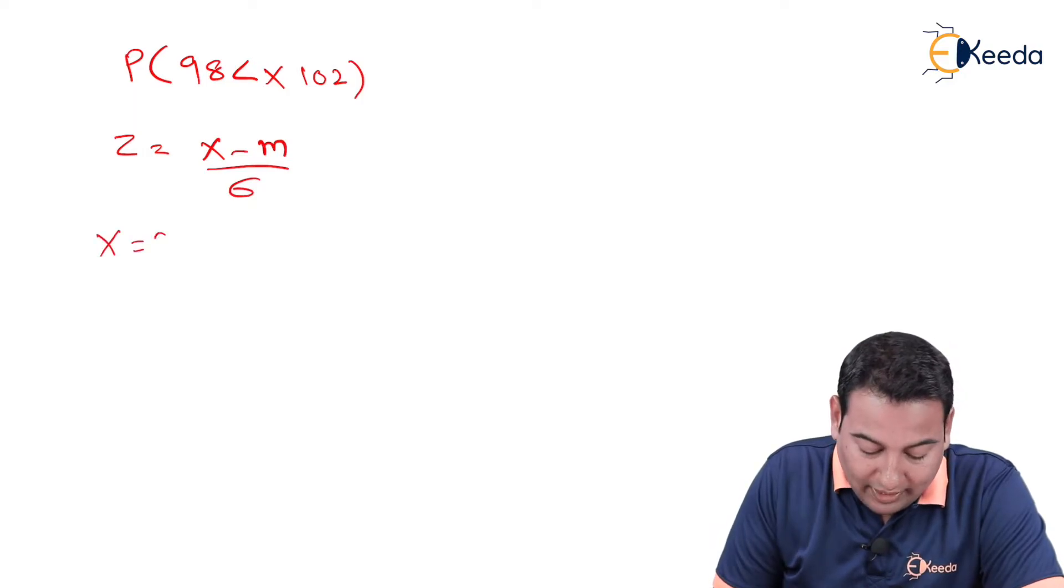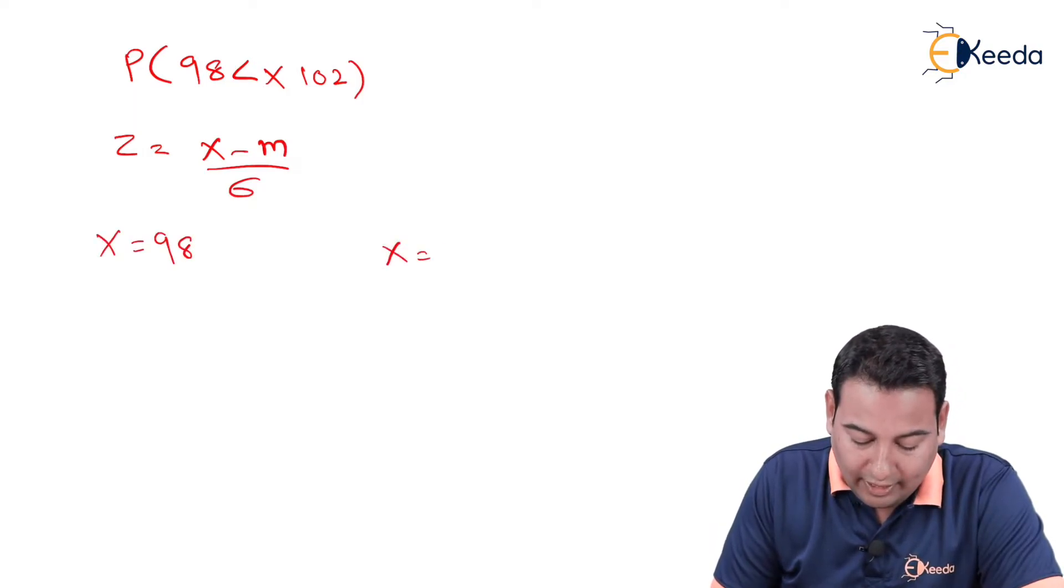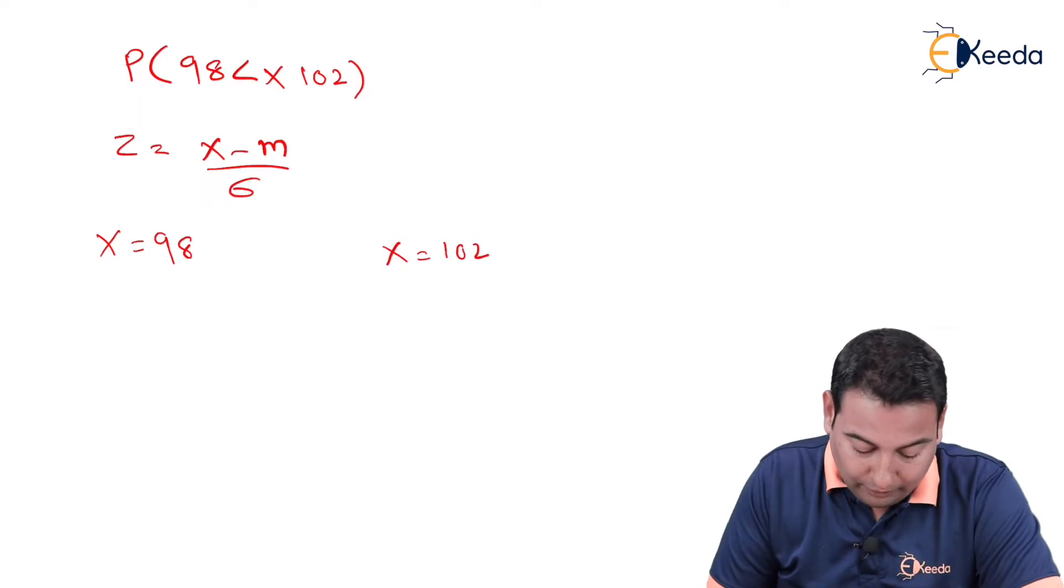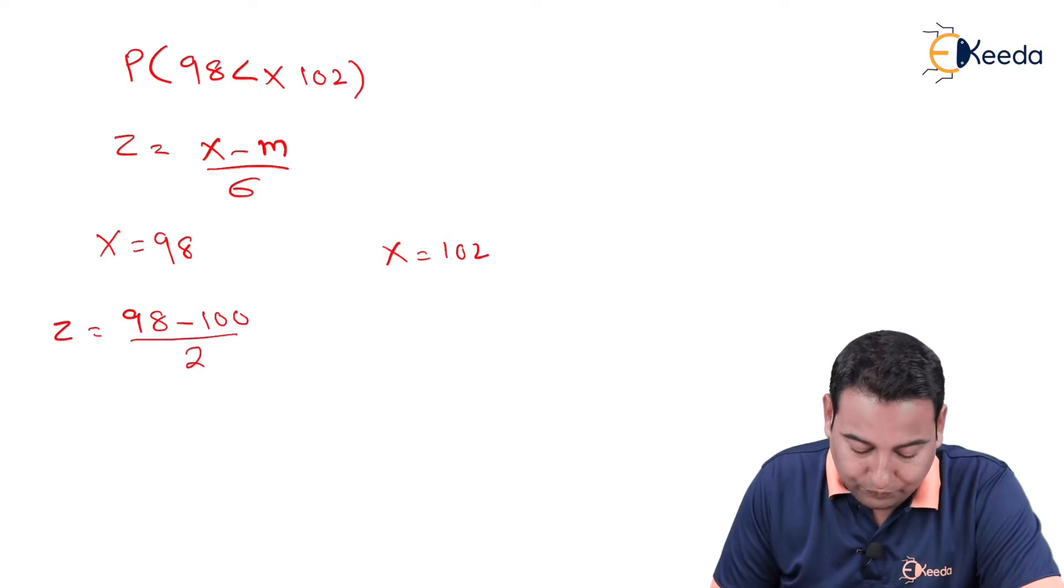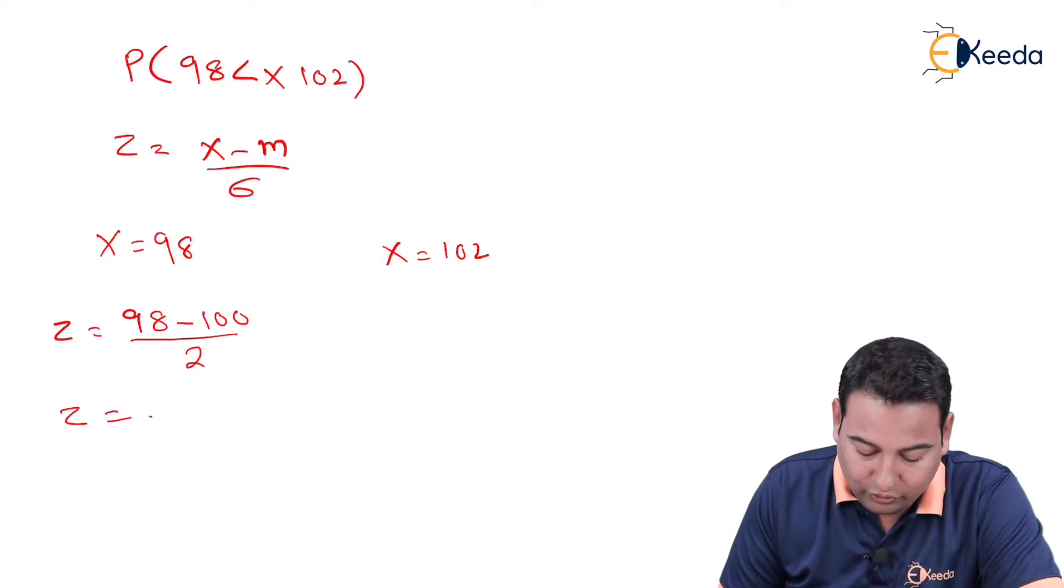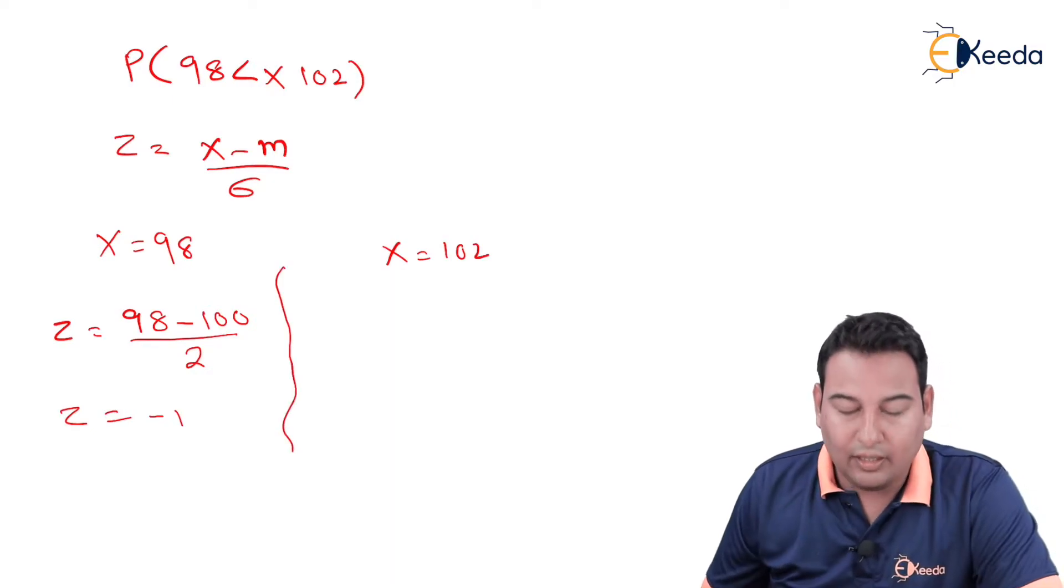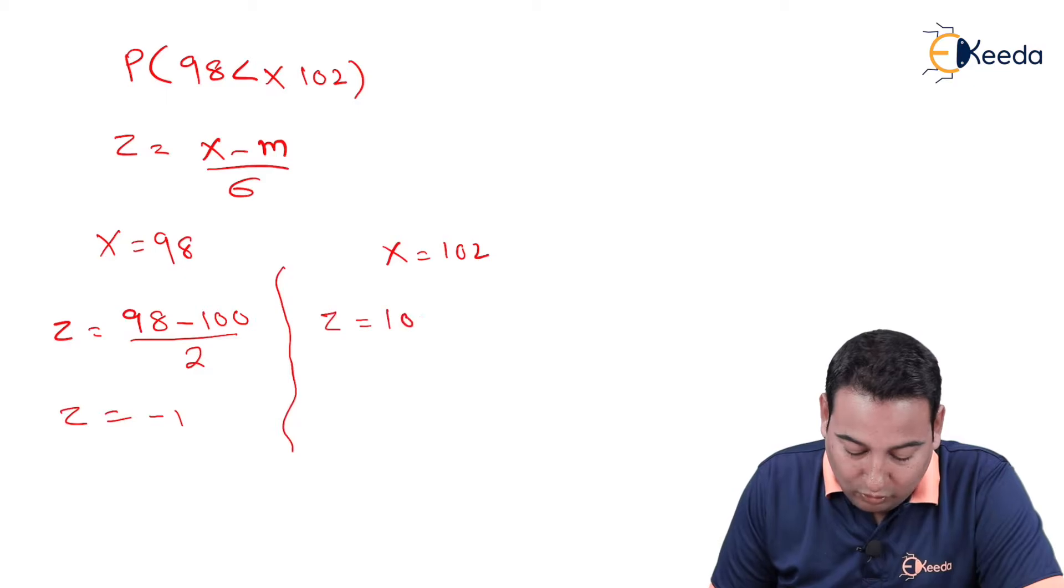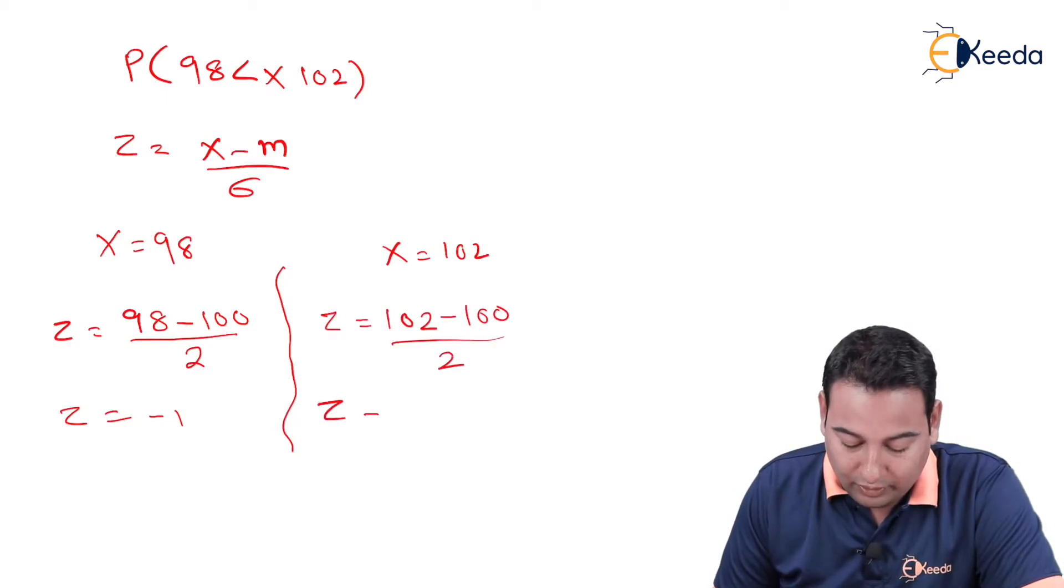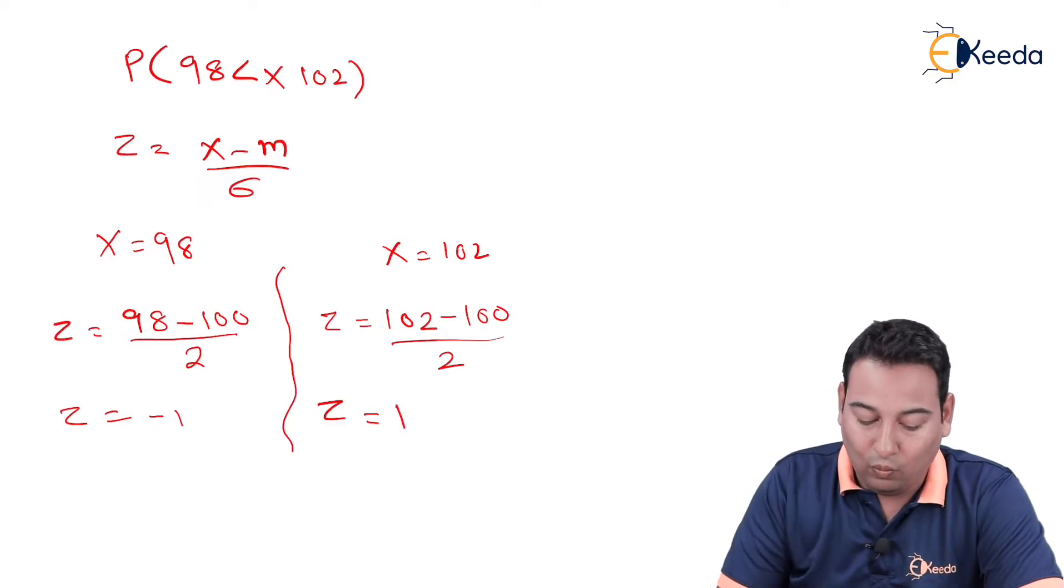X, there are two x values, 98 and 102. Let us substitute 98 minus m. m is 100, sigma is 2, which is equal to minus 1. If you substitute x equal to 102, Z is equal to 102 minus 100 upon 2, which is equal to 1.